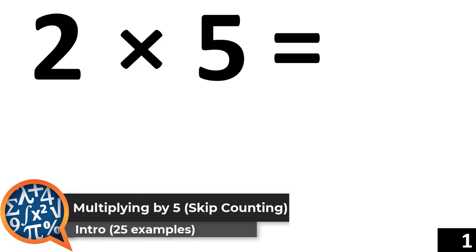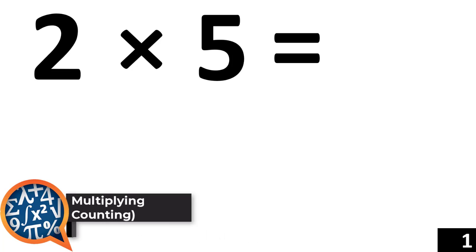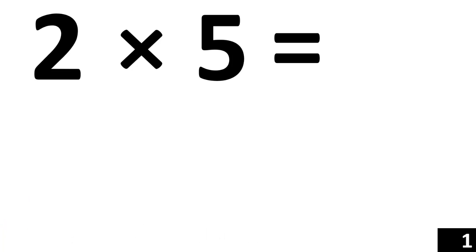In this video we are going to take a look at the fourth multiplication rule, and that's multiplying anything times the number 5 using skip counting. Let's go.